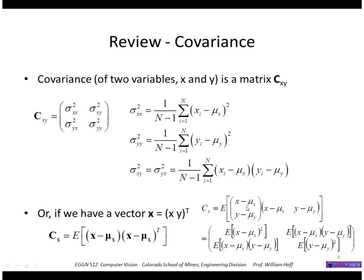Writing that out would look like this. We'd have the vector x minus the mean of x and the value transposed. We'd bring the expected values, the expectation operator, inside each of the matrices. So we would eventually get this covariance matrix Cxy.